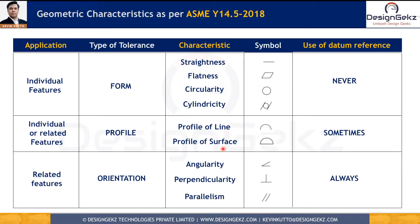Profile Tolerance can also control the orientation and location of a feature of size, and that is why we need datum references in those cases. We also have Angularity, Perpendicularity, and Parallelism — the Orientation Controls. Orientation Controls will always have datum references associated with them, because we can check Angularity, Perpendicularity, and Parallelism only with some reference.